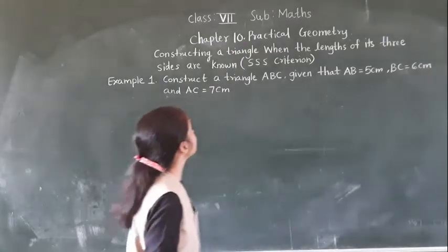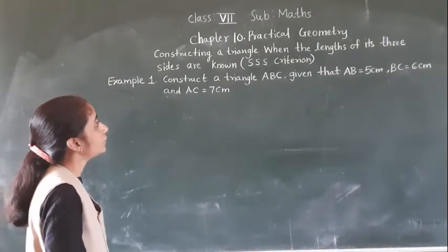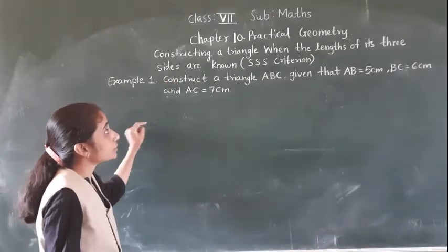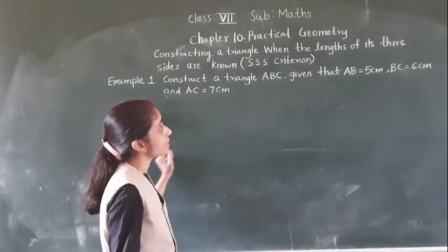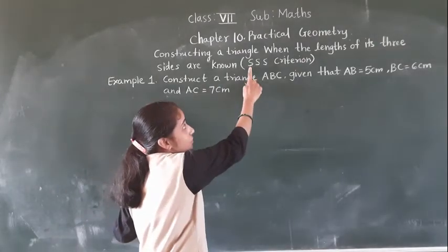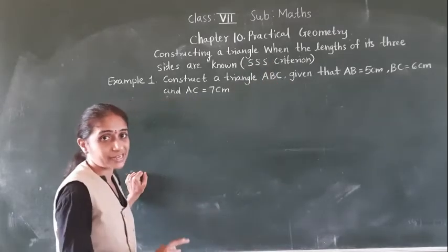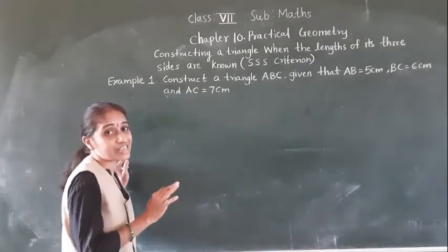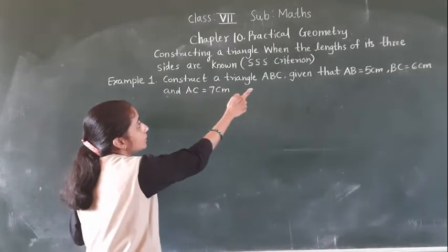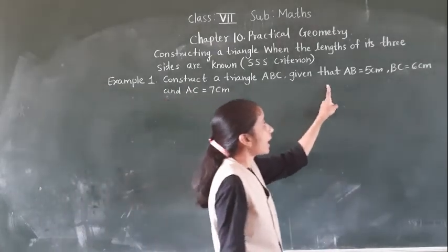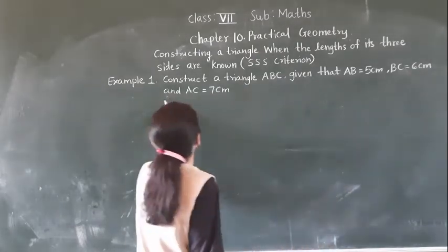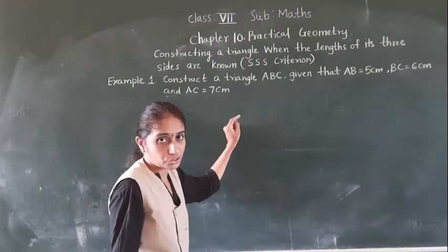Good morning students. Let's learn constructing a triangle where the lengths of its three sides are known. We have to construct a triangle where we know the three sides. This criterion — three sides given — is already in our world. So if three sides are given, we have to construct the triangle. Now example 1.